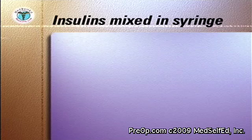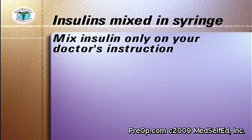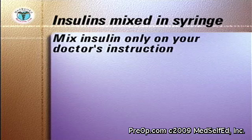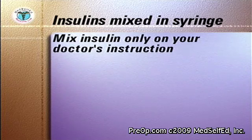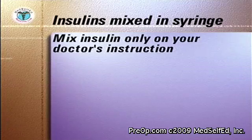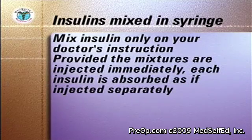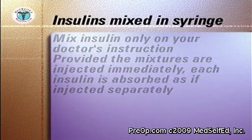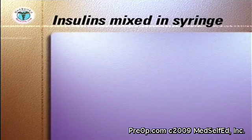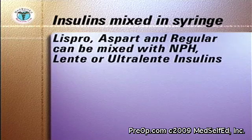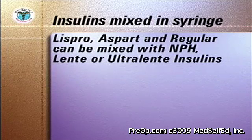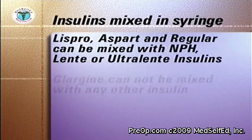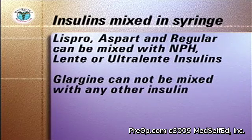With your doctor's instructions, several combinations of two different types of insulin can be mixed together in the same syringe and given as one injection. Once mixed, the combined injection must be given immediately, or the effect of the regular component of the injection will be diminished. The rapid-acting insulins — Lispro, Aspart, and regular — can be mixed with the longer-acting NPH, Lente, or Ultralente insulins. Glargine cannot be mixed with any other insulin.